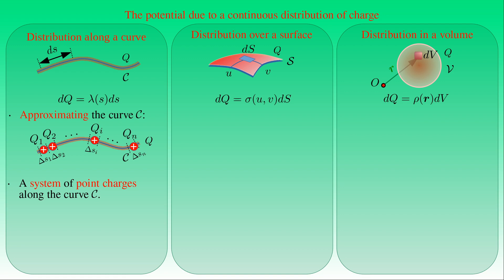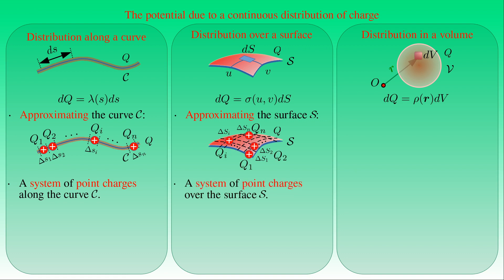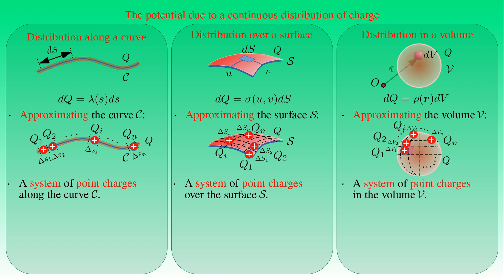Similarly, for charge over surface S, we construct N flat surface elements ΔS1, ΔS2, …, ΔSN with areas much smaller than the total surface area, and approximate the distribution with point charges q1, …, qN at the midpoint of each element. For charge in volume V, we break it into N volume elements ΔV1, …, ΔVN (each much smaller than V) and approximate the distribution with point charges q1, …, qN at the midpoint of each volume element.